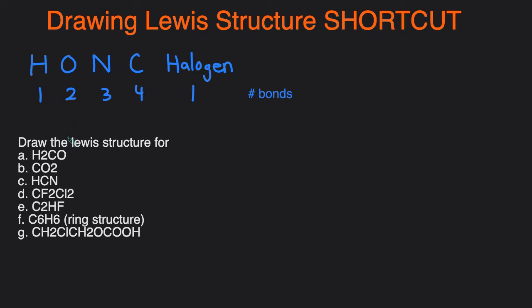But if you can use the shortcut, this is it: HONK 1, 2, 3, 4, Halogen 1. This just tells you how many bonds these elements like to form. Hydrogen likes to form 1 bond, oxygen 2, nitrogen 3, carbon 4, and then the halogens like to form 1 bond.